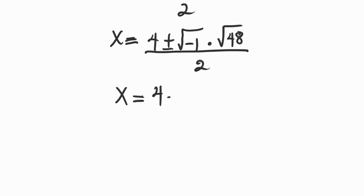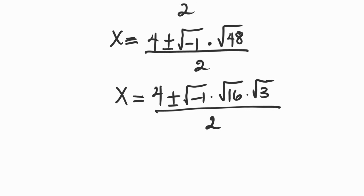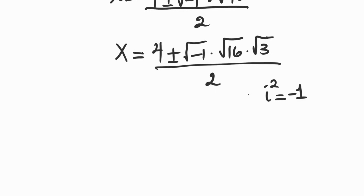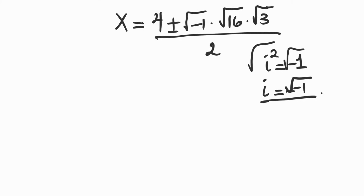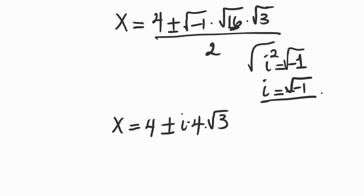Now we have 4 plus or minus the square root of minus 1 times the square root of 16 times the square root of 3, all divided by 2. We know that i squared equals minus 1, and taking the square root of both sides, i equals the square root of minus 1. So anywhere we see the square root of minus 1, we replace it with i. Therefore x equals 4 plus or minus i times 4 times the square root of 3, divided by 2.